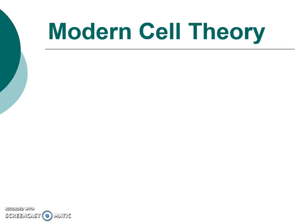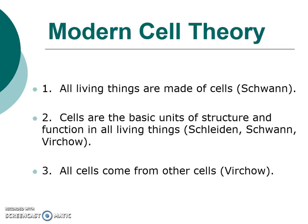Today we have our modern cell theory, which builds off of three big things these guys came up with. Number one: all living things are made of cells — that came from Schwann. Number two: cells are the basic units of structure and function in all living things — that came from Schleiden, Schwann, and Virchow. Number three: all cells come from other cells through division, which we'll find out is called mitosis — and that came from Virchow as well. So there's your current modern-day cell theory.